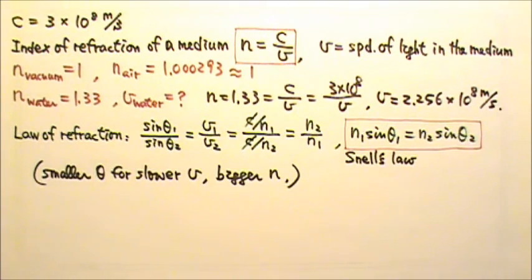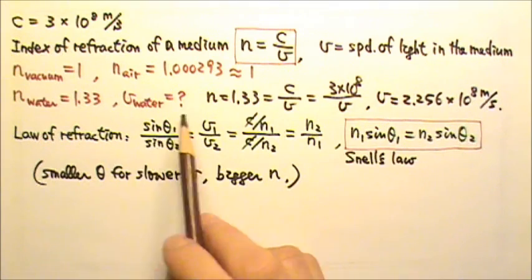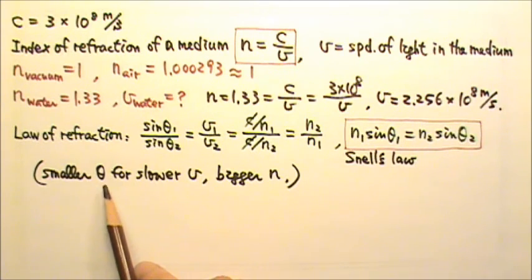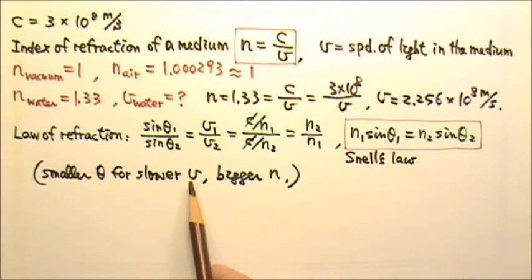It's still very useful for us to keep in mind that these equations tell us that when refraction happens, the angle is smaller for the medium in which the speed is slower. And slower speed means bigger N.